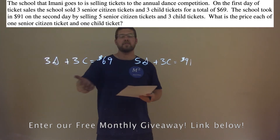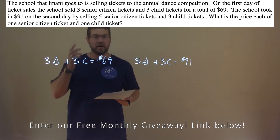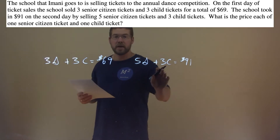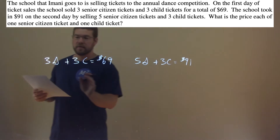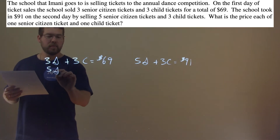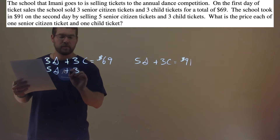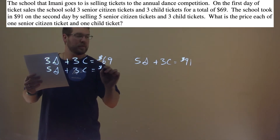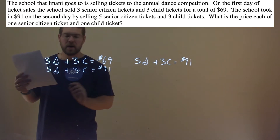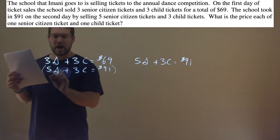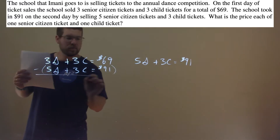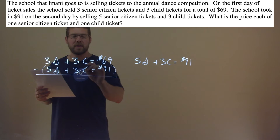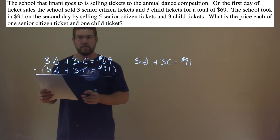Now we have two equations and we can solve this system of equations. We'll solve by elimination. I'm going to take the second equation and put it underneath the first one: 5S plus 3C equals $91. By subtracting the two equations, the C's are going to cancel, and that's what I was looking for.